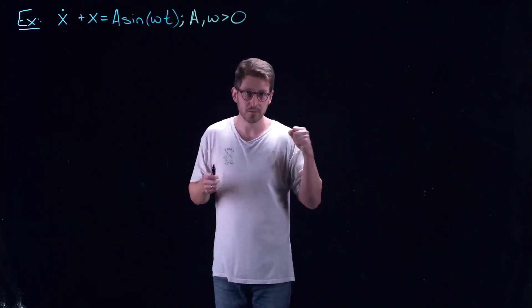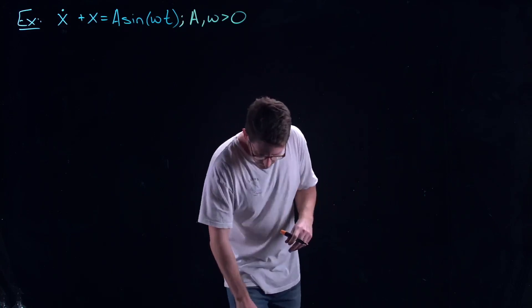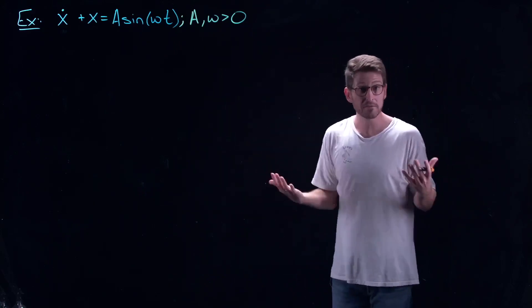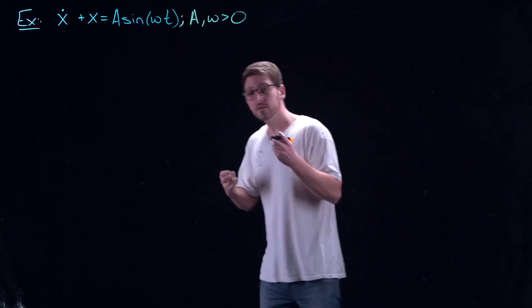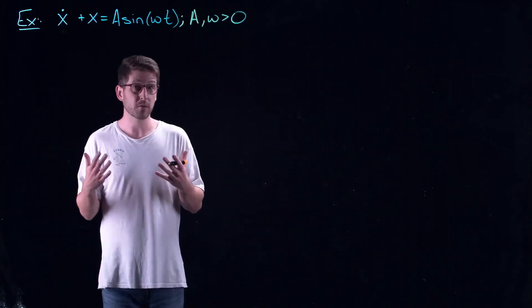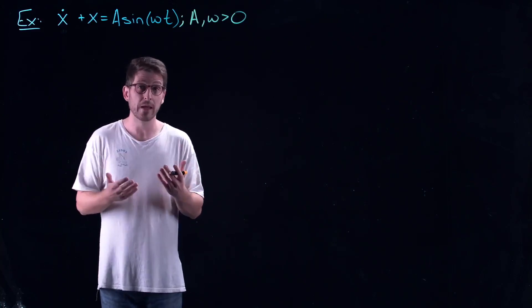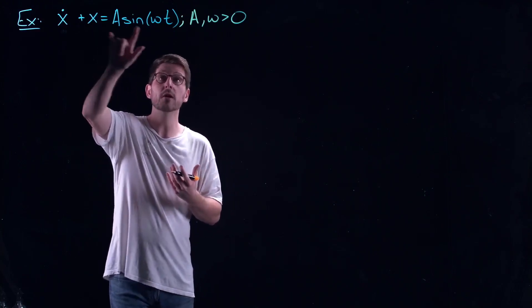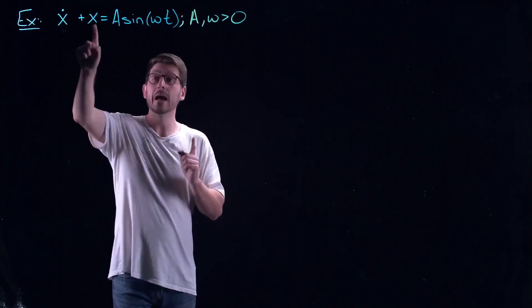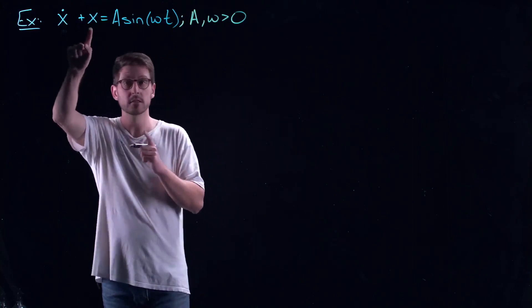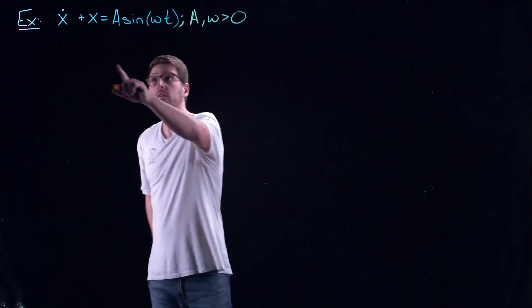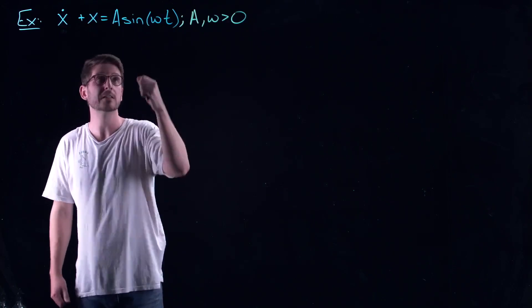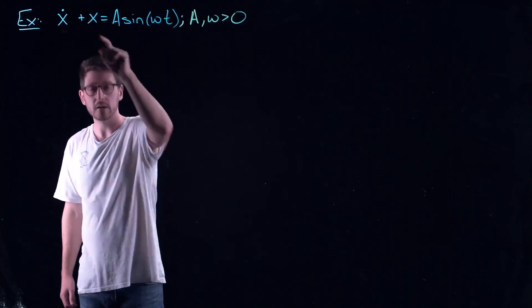This is actually a non-autonomous system, something we haven't really spoken about. Non-autonomous systems fall into our framework in a sort of weird way — they can be extended to a two-dimensional dynamical system. When you have a non-autonomous system, you sort of just add one to the dimension of the system. So even though this is a one-dimensional dynamical system, the non-autonomous part makes me think this should be considered as a planar dynamical system.